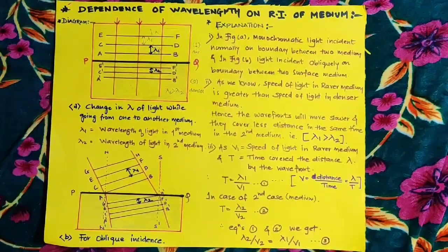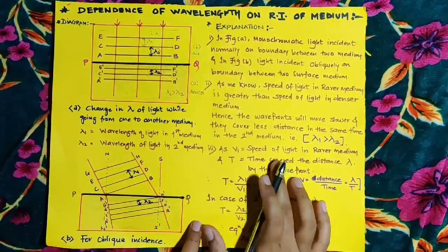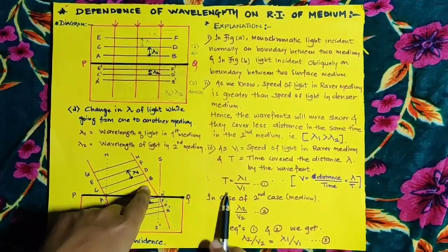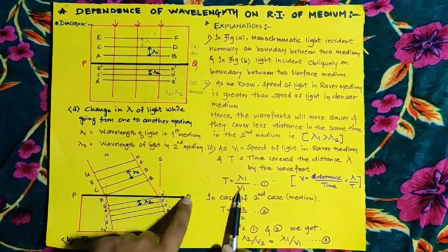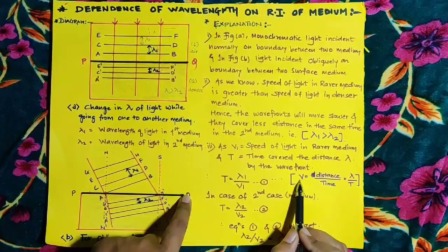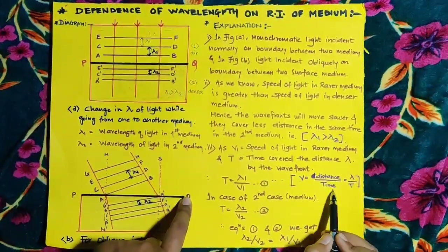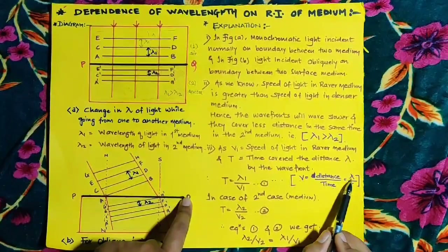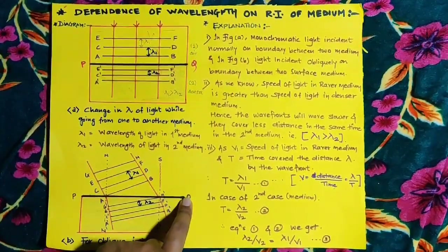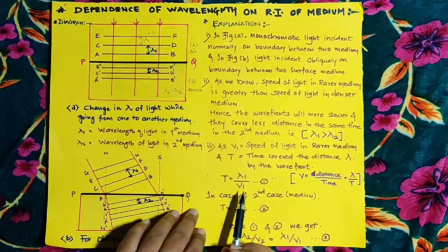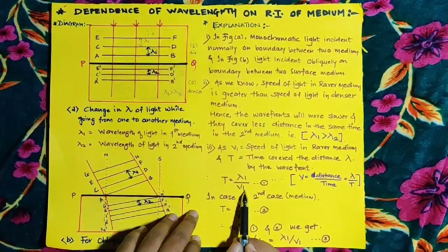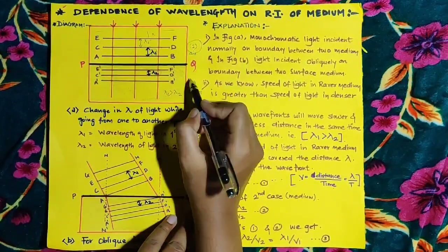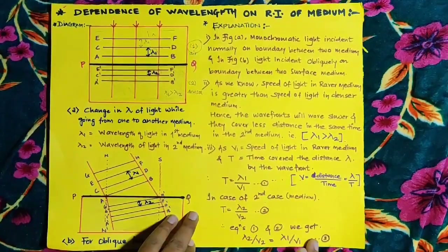Let V1 be the speed of light in the rarer medium. The time T for a wavefront to cover distance lambda is given by V = lambda / T, so T = lambda / V. For medium 1: T = lambda 1 / V1. For medium 2: T = lambda 2 / V2. Since the time T is the same for both media, we can compare these two equations.